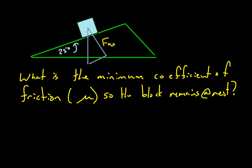So there's Normal. Here's what we've called F.A. — that's what tends to have this accelerate down the plane. And here's the force of gravity, also known as weight. And then there's going to be a frictional force on here as well.